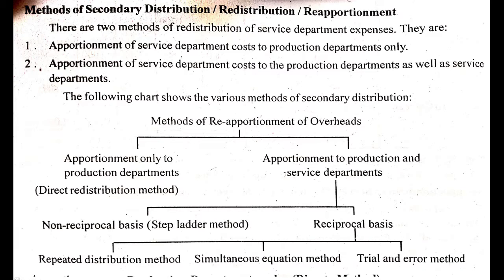The method of Secondary Distribution of Overhead is mainly classified into two categories. First is Apportionment Only to Production Department, also known as the Direct Method. Second is Apportionment to Production and Service Department. Under that second category, there are two methods: first, Reciprocal Service Method, and second, Non-Reciprocal Service Method, also known as the Step Ladder Method. Under Reciprocal Service Method, there are three methods: Repeated Distribution, Simultaneous Equation, and Trial and Error Method.